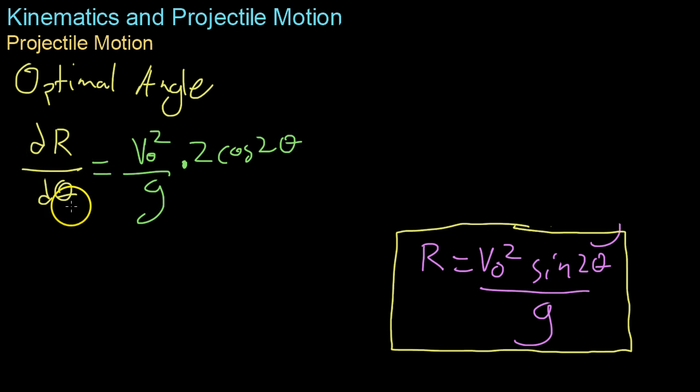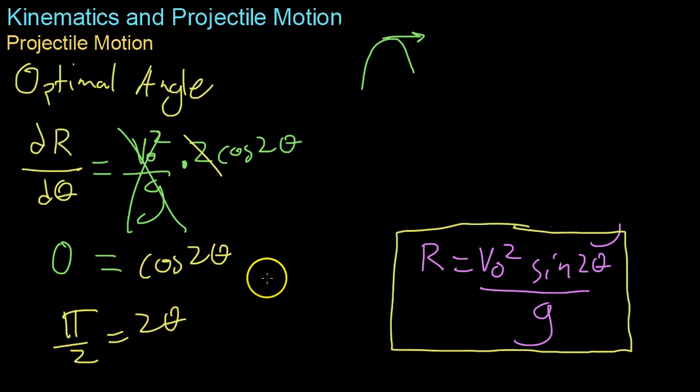Now on a graph of dR/dθ the maximum will occur where the derivative is 0 in other words at some sort of peak in the graph right here where the derivative is equal to 0 so you set this all equal to 0. You get that 0 equals cosine 2 theta. When does cosine equal 0? Well that's when 2 theta is π over 2 and you get that the optimal launch angle is theta is π over 4 or 45 degrees.